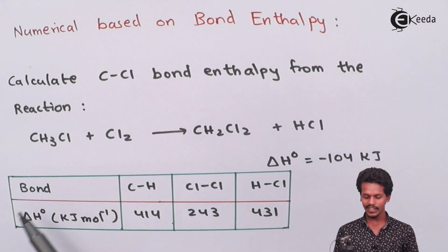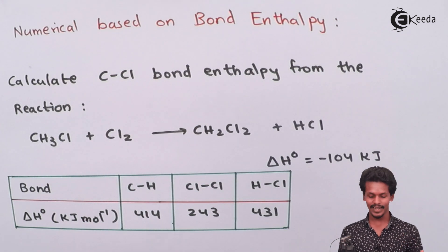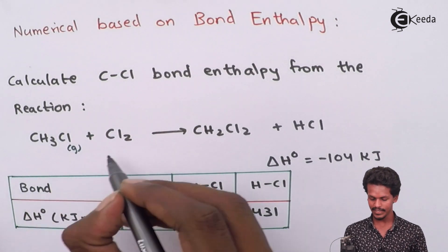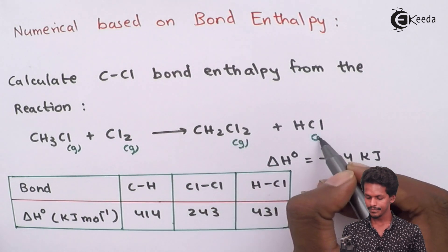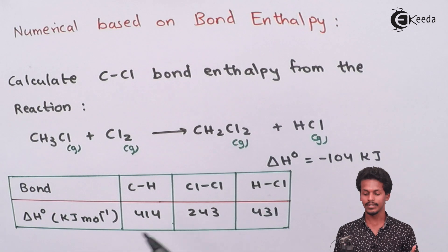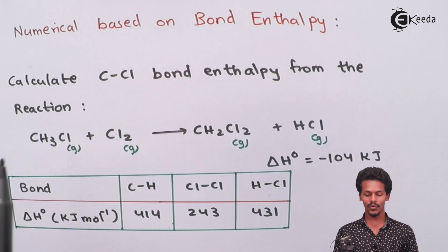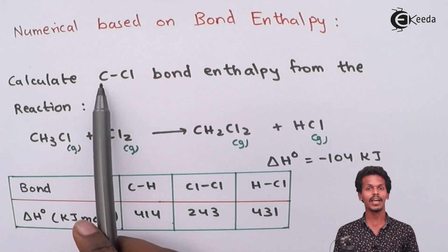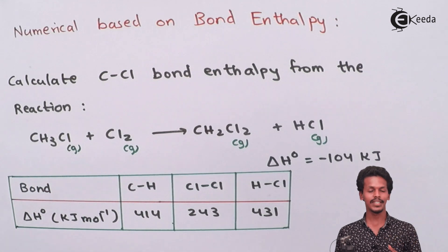One important thing to mention is the states — all species are present in the gaseous state, whether it is chlorine gas or HCl gas. From this data, we have to calculate the bond enthalpy of the carbon-chlorine bond.